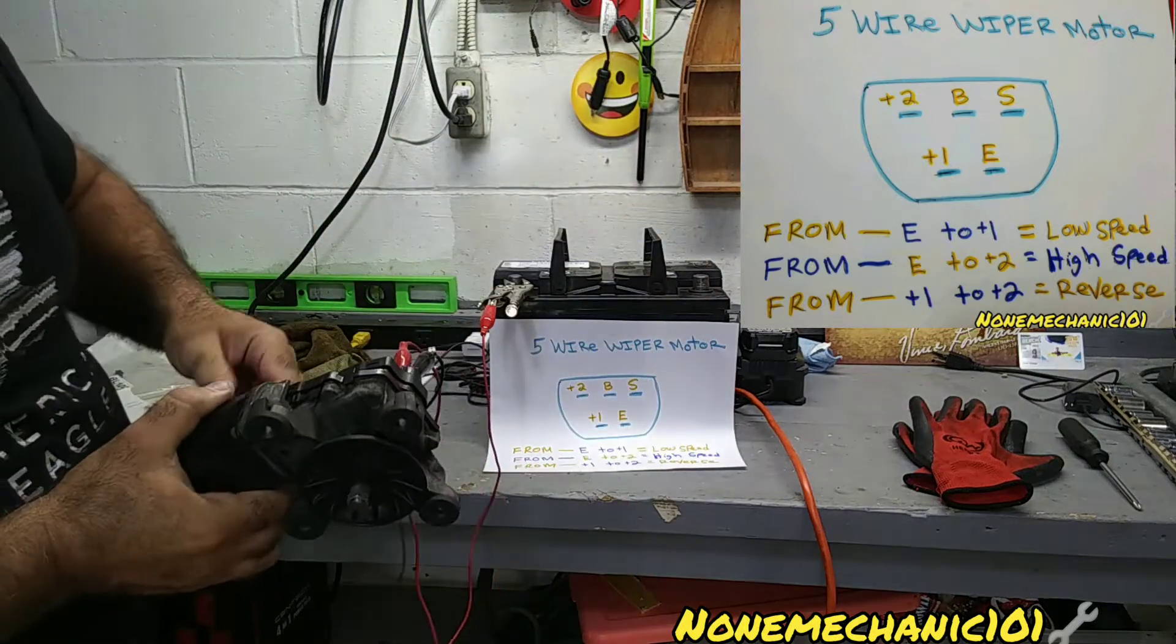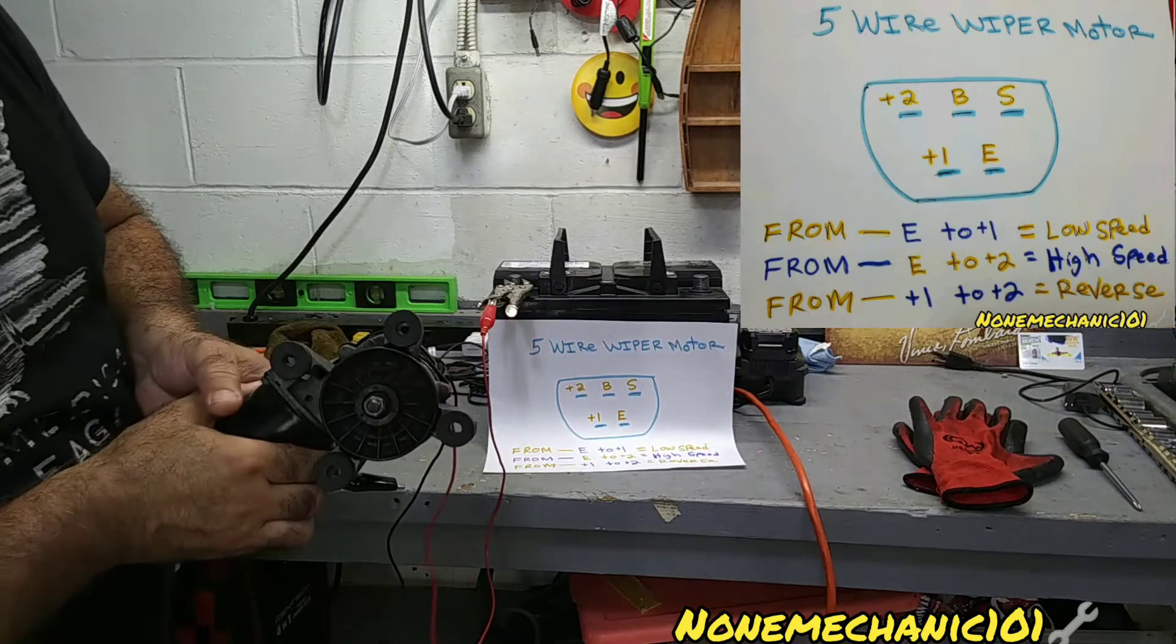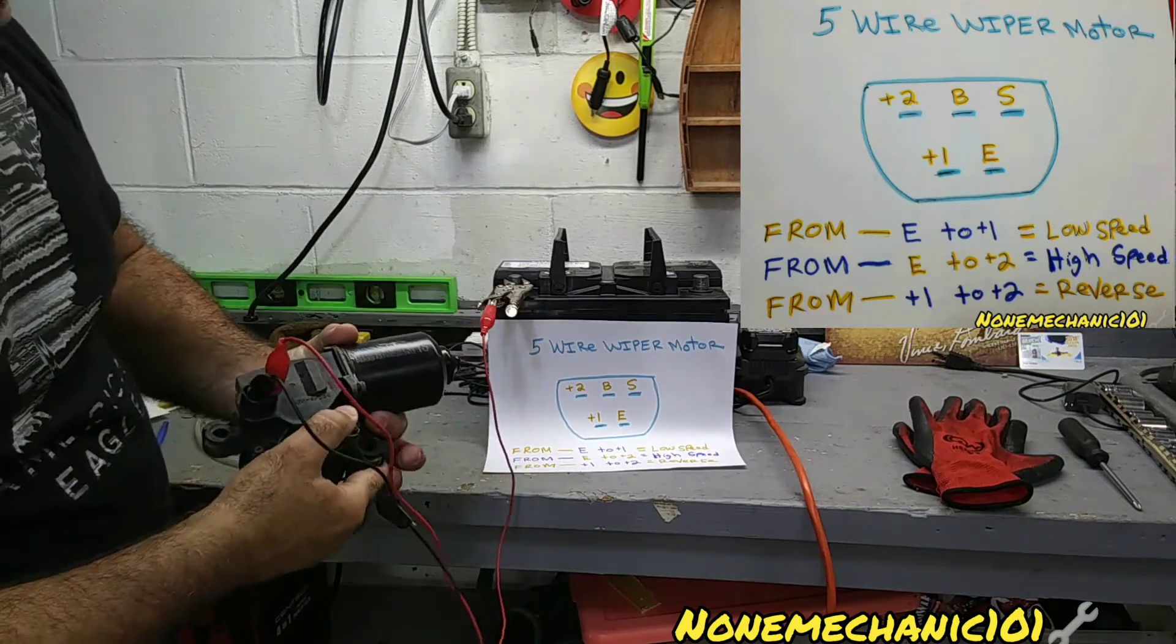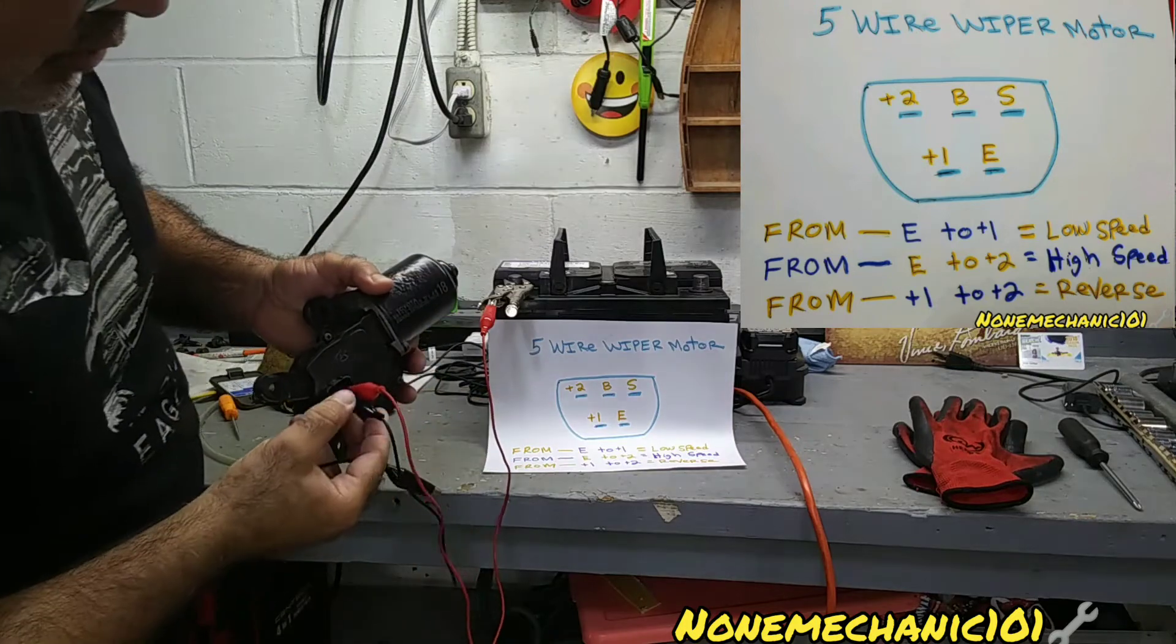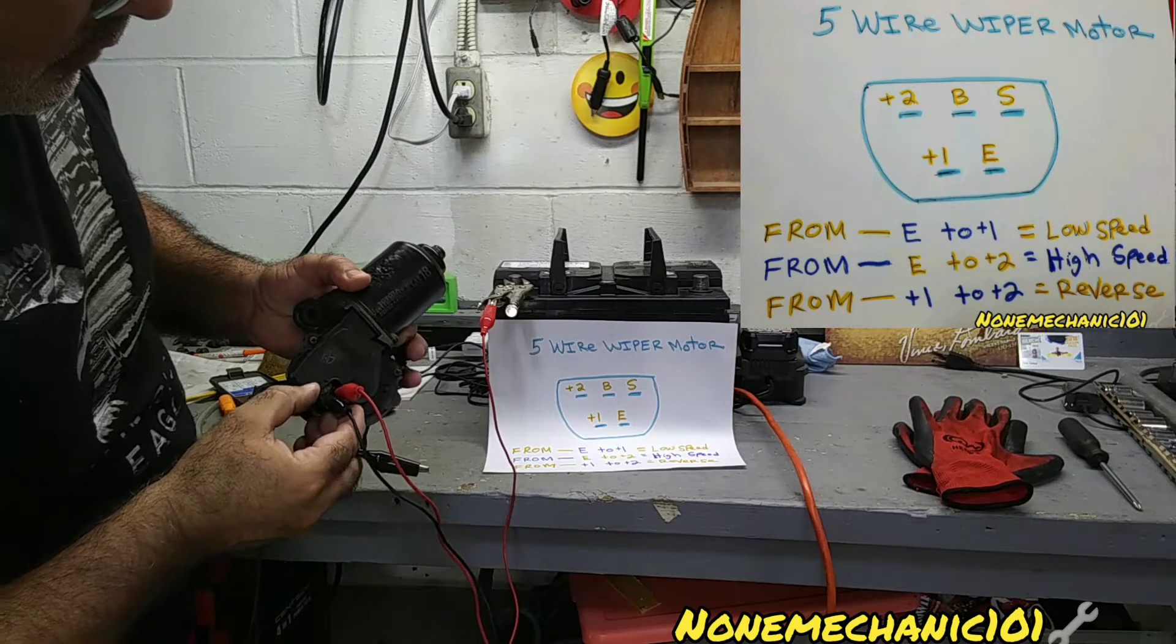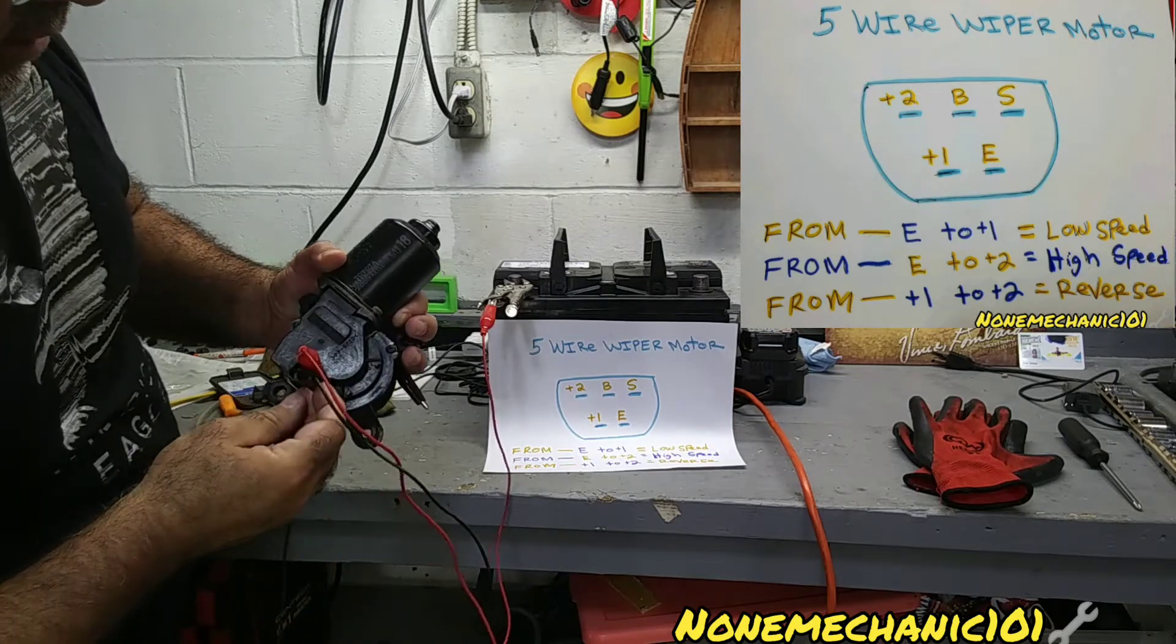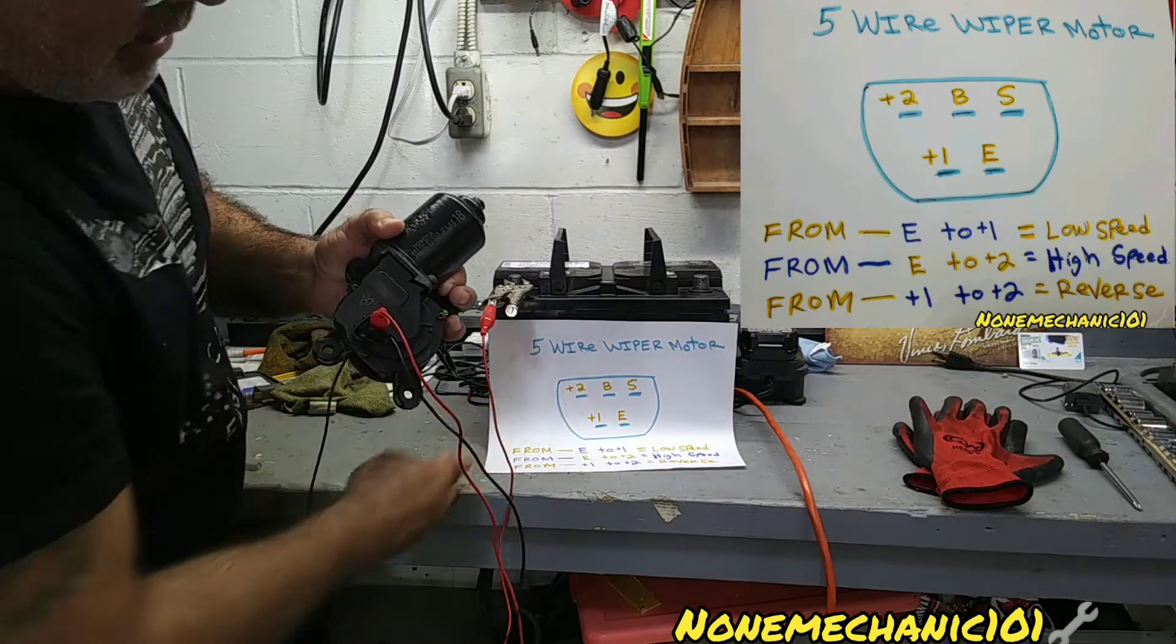Now we're going to do reverse. Reverse is from +1 to +2. We already got it connected at +2 because that's where we had it. +2 is the top. So we're going to take the negative one and put it at +1. It's in the bottom of it, you can see the bottom.